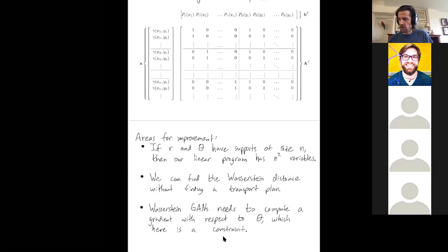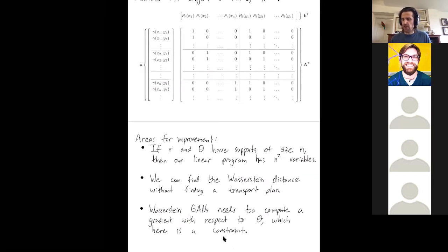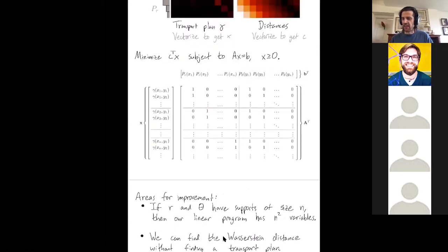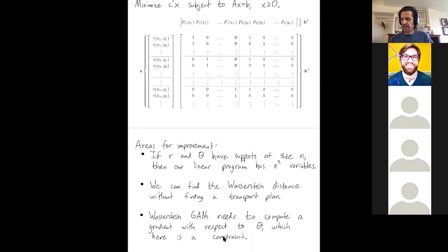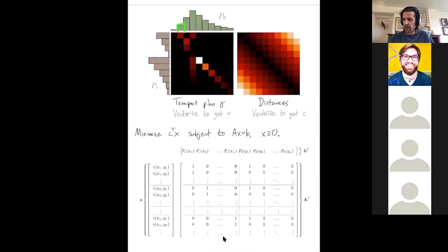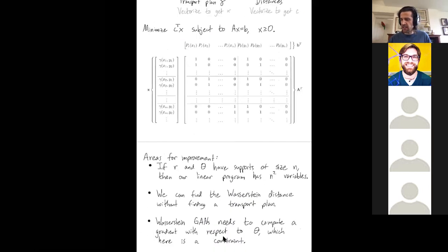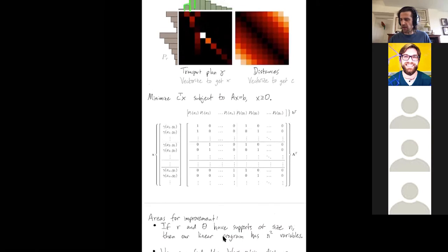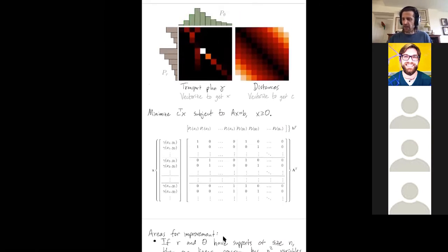A couple of comments. There are some areas for improvement. So if my measures R and theta that I started with have only n columns and little bars and locations where they have mass, I actually have to really expand the size of my problem. R and theta might only have n different places where they have mass, but I needed a variable in my transport plan for each i and j.